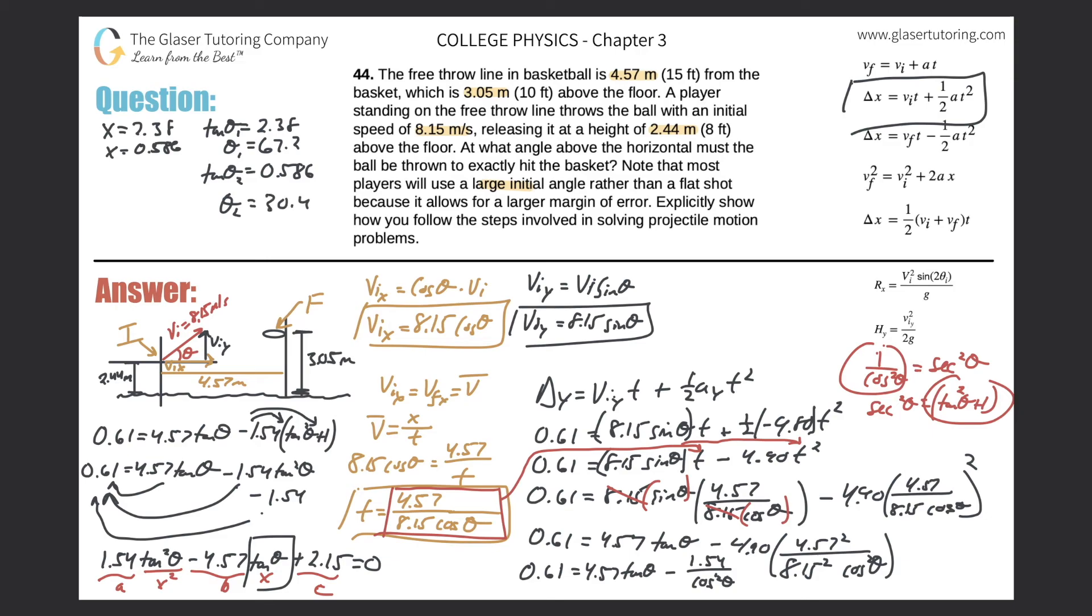These two will work. But now one of them makes more sense than the other. As they explained here, they said most players will use a large initial angle because it reduces or gives them a larger margin for error. So the larger angle here is actually going to be the theta that I'm looking for. This is the angle. This is the angle above the horizontal that they must throw the ball so that they can exactly hit this basket. So my theta, my final answer is going to be 67.2 degrees. That is the theta value right in there.